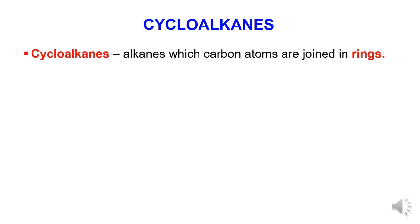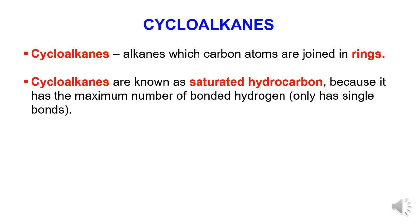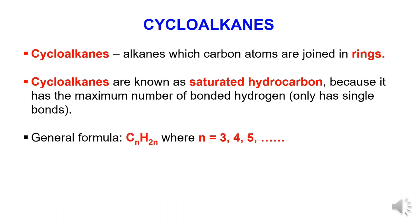Next, cycloalkane. Cycloalkane is an alkane in which carbon atoms are joined in rings. Cycloalkanes are known as saturated hydrocarbons because they have the maximum number of bonded hydrogen and only single bonds. The general formula of cycloalkane is CnH2n, where n starts from 3, 4, 5.